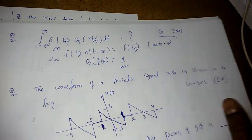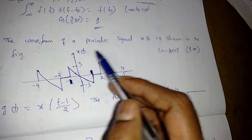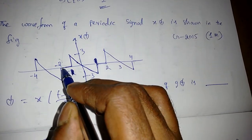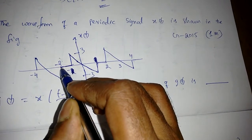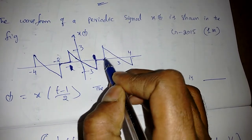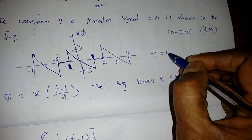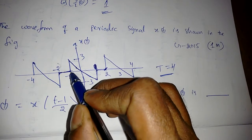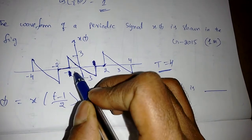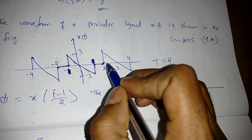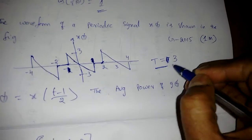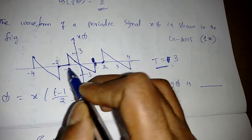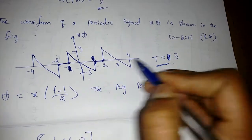This problem came in GATE 2001 and the next one came in GATE 2015 for one mark. The waveform of a periodic signal x(t) is shown in the figure. Looking at the signal, I initially consider it goes from minus 2 to 2, suggesting a period of 4, but correcting that — it goes from minus 1 to 2, so the time period is equal to 3.